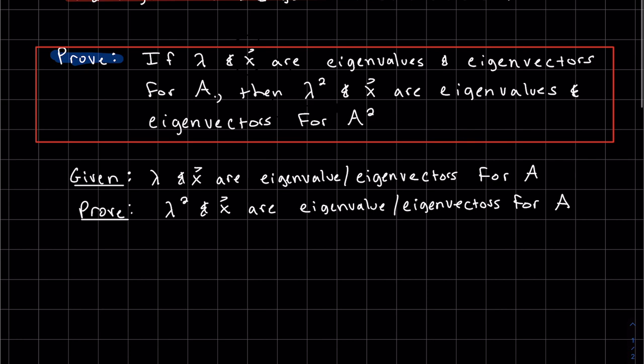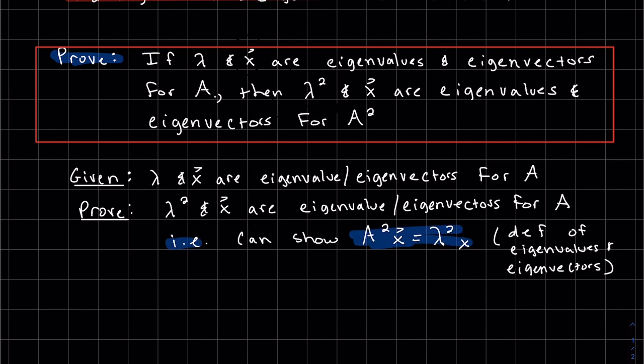And another thing I'd like to do before I start is let's think of a way we can show this. Like let's have a plan of how to prove. There's lots of different proving techniques, but for this one we're gonna use the definition of what an eigenvalue eigenvector is. In other words, if we want to prove lambda squared and x are eigenvalue eigenvectors for A, then we want to show A squared x equals lambda squared x, because this is actually the definition of eigenvalues and eigenvectors. So that's what we need to show.